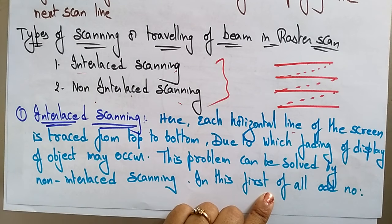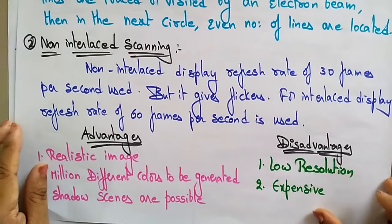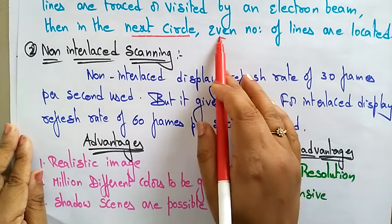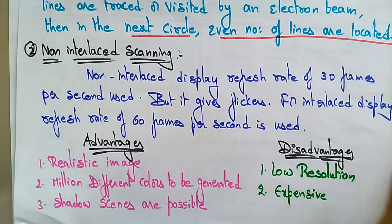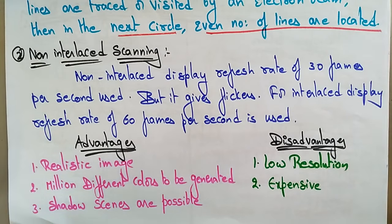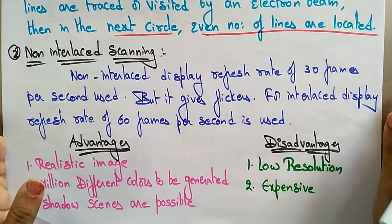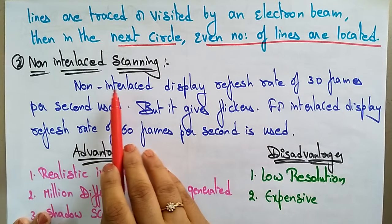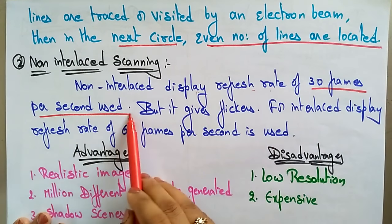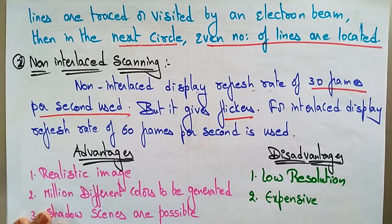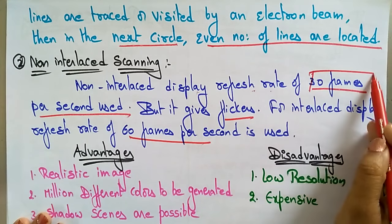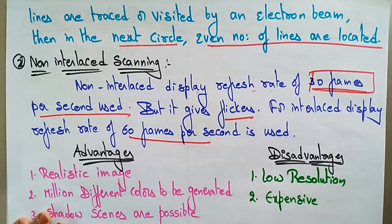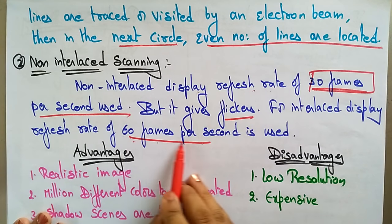In interlaced scanning, first the odd-numbered lines are traced or visited by the electron beam, then in the next cycle the even-numbered lines are visited. So odd lines are visited first, then even lines — that is interlaced scanning. For interlaced scanning, a display refresh rate of 60 frames per second is used. In non-interlaced scanning, only 30 frames per second is used, but using 30 frames per second causes flickering, so interlaced display uses 60 frames per second to overcome that disadvantage.